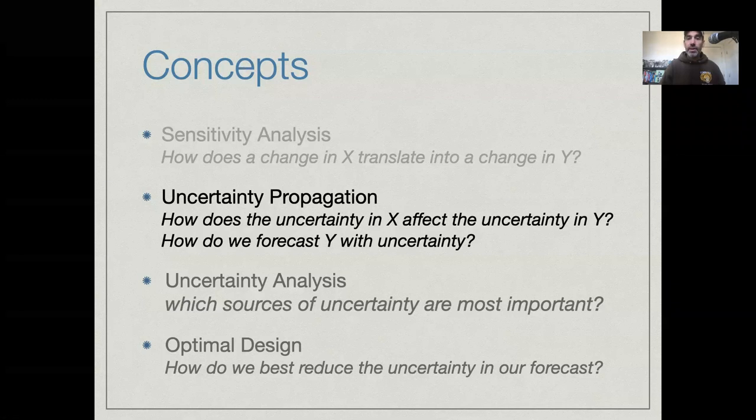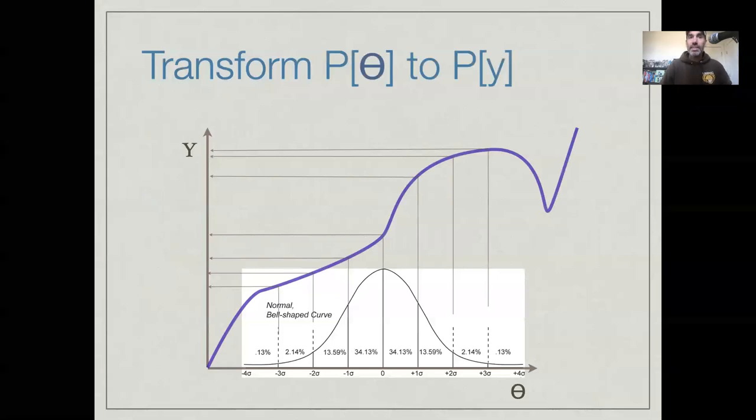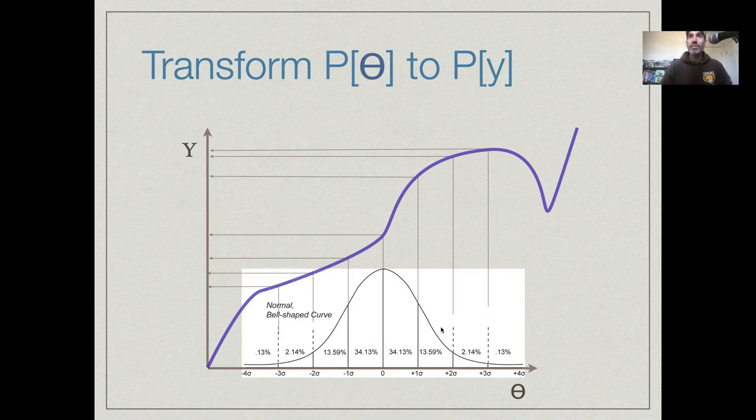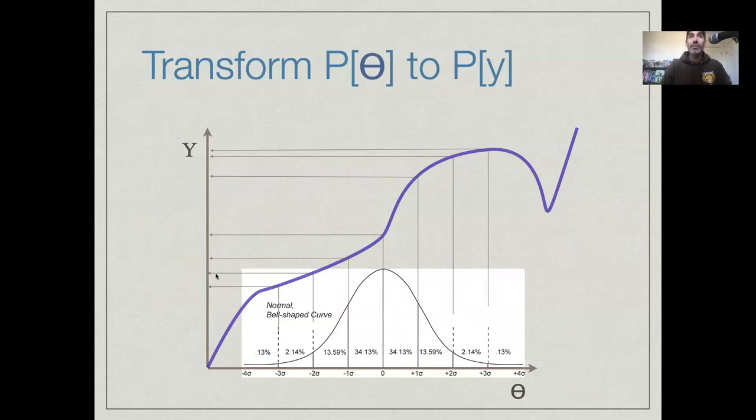So welcome back. In this video, what we're going to do is build on what we learned in last video about sensitivity analysis to start talking about how we propagate uncertainties into model runs. So the general idea here of propagating uncertainty is really just can be rethought of as transforming uncertainty in our inputs into the probability distribution of our outputs. So if we have some probability distribution of our inputs, we have some nonlinear function, and the question is, what is the probability distribution of our outputs? That's the general case.